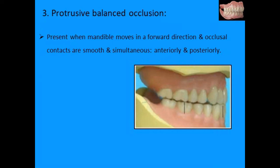Bilateral balanced occlusion can be protrusive or lateral. Protrusive balanced occlusion is present when the mandible moves in a forward direction and occlusal contacts are smooth and simultaneous anteriorly and posteriorly, with at least three points of contact — two posteriorly and one anteriorly. More contacts means better balance. Protrusive balanced occlusion is absent in natural dentition.